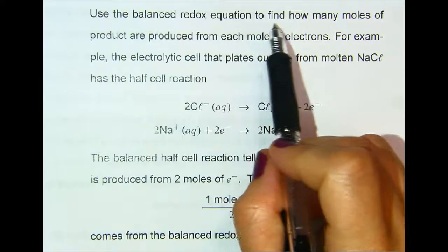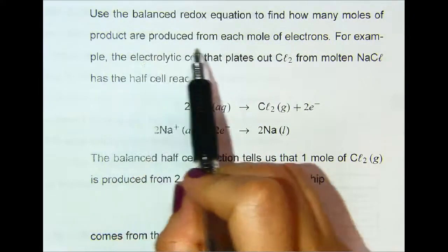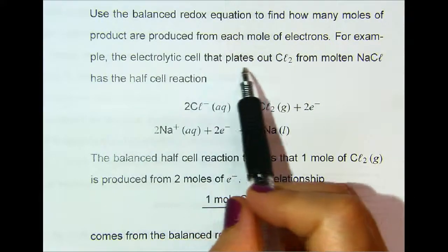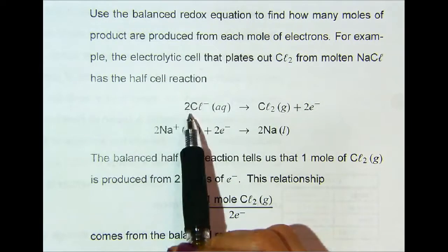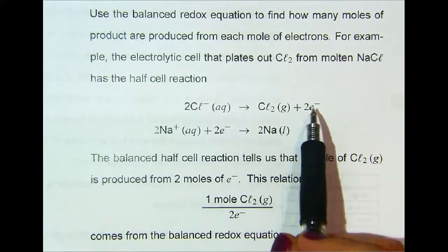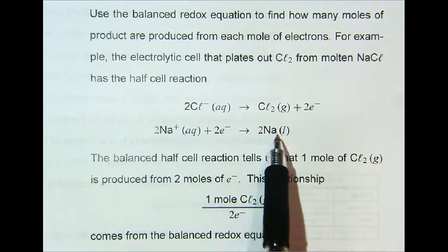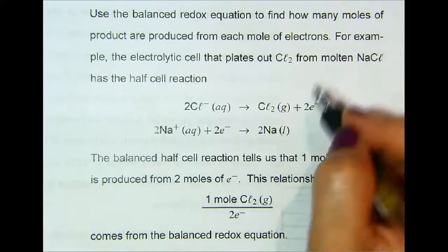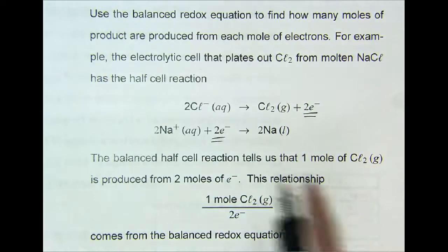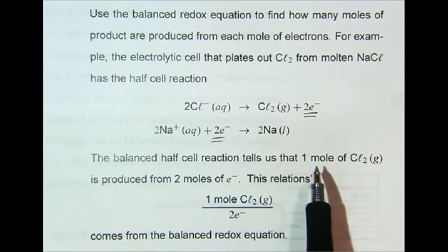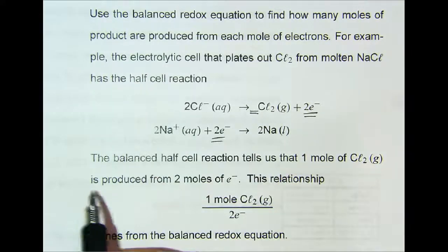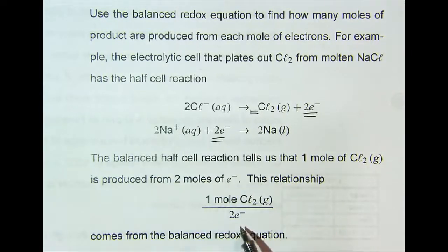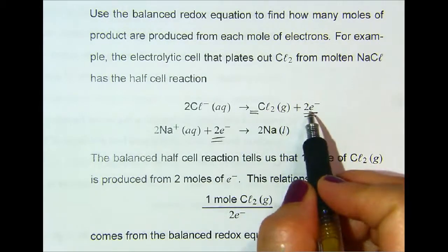Use the balanced redox equation to find how many moles of product are produced from each mole of electrons. For example, the electrolytic cell that plates out chlorine from molten sodium chloride has the half-cell reactions: 2 Cl⁻ → Cl₂ + 2e⁻, and 2 Na⁺ + 2e⁻ → 2 Na. Notice that 2 is the number of electrons in these reactions. The balanced half-cell reaction tells us that 1 mole of Cl₂ is produced from 2 moles of electrons — basically a mole-to-mole ratio where for every 1 mole of Cl₂, we have 2 electrons.